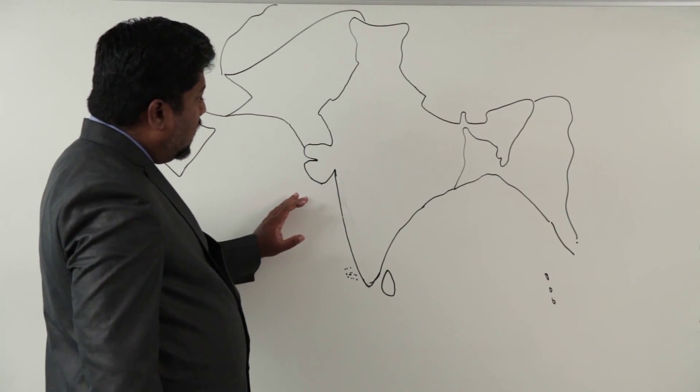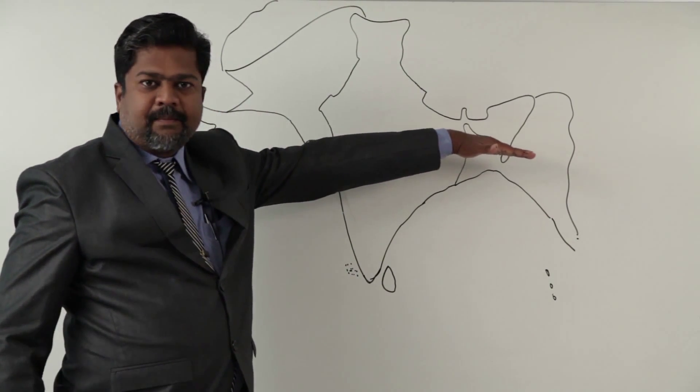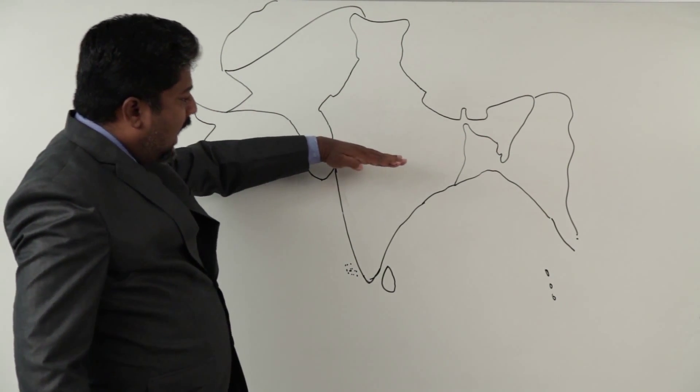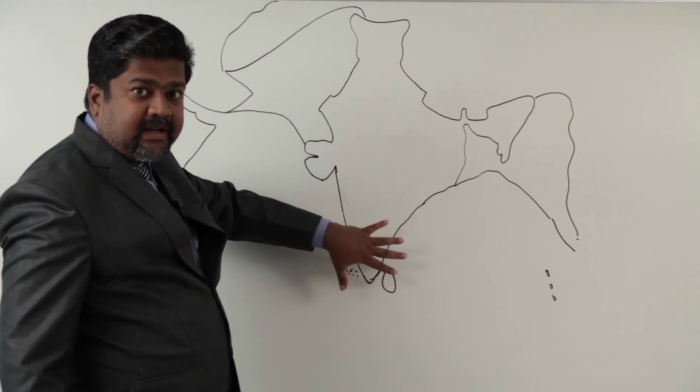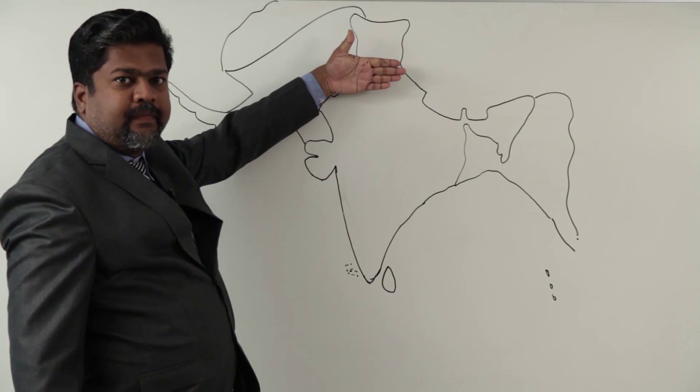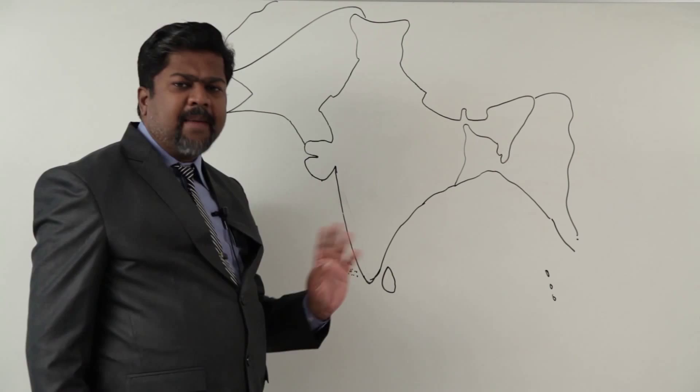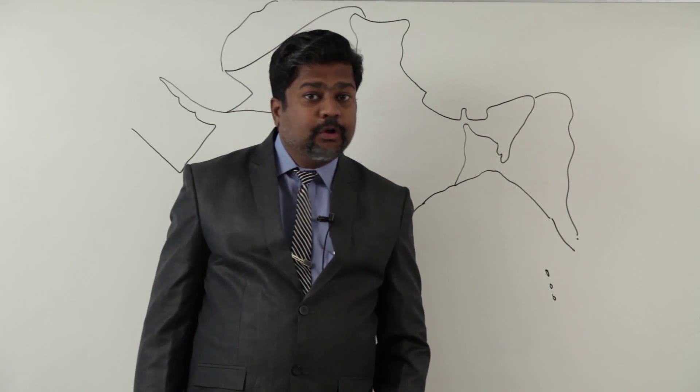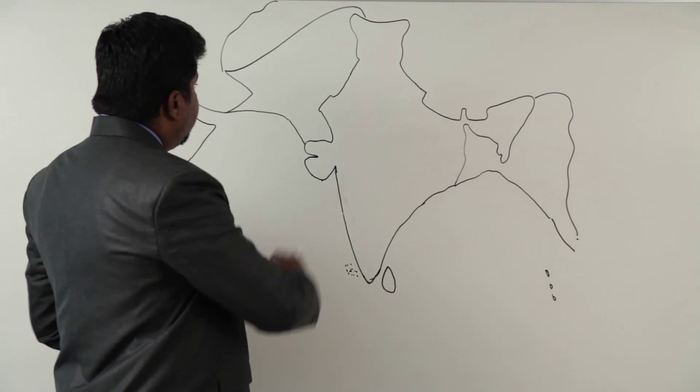Now keep in mind the Tropic of Cancer passes through this part. So the southern part of this line is in tropical Indian country, whereas this is in temperate zone. But for India, the climatic conditions are almost uniform, I am not saying same to same but almost uniform.